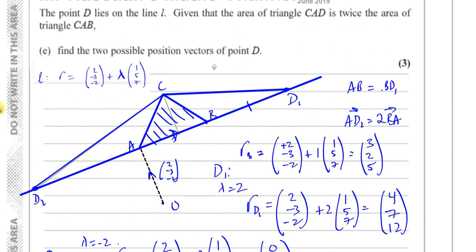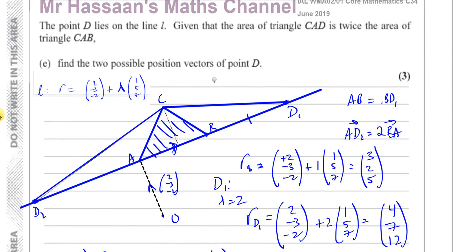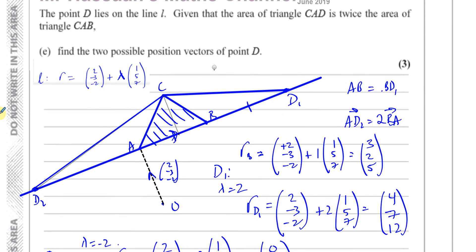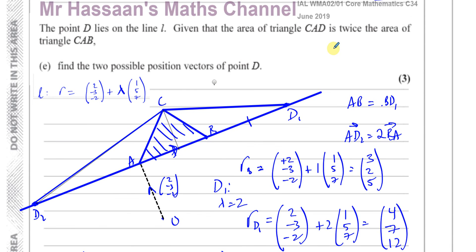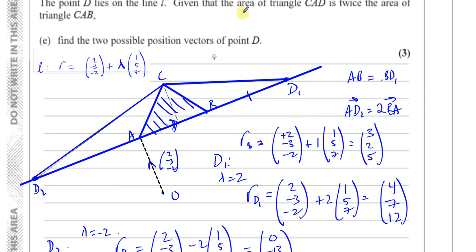So we've finished this question. I hope that was clear for you — those are the two possible position vectors of D. If you'd like to see the previous part of the question, I'll put it on the card at the top and also on one of the end screen links. I'll also collect all the questions from this paper in a playlist, and all the other vectors questions from C3, C4 and the new P4 in another playlist. Thank you for watching — I hope everything was clear, and I'll see you again in another video. Goodbye.